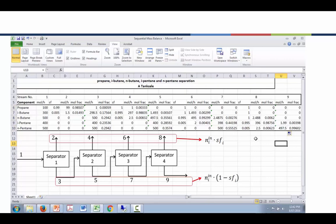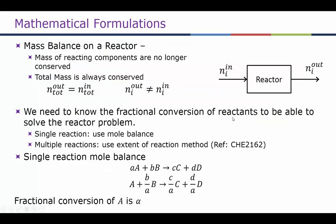You can go through the solution in your own time to check if the mass balances work out. Moving on to reactive mass balances — in this case, total mass is conserved for the reactants coming in and the products coming out of the reactor. However, the mass or moles of each component is not conserved, so we cannot use the earlier formula. We need to know the fractional conversion of the reactants and the stoichiometry. For single reactions, it's better to use mole balances in Excel; for multiple reactions, it's better to use the extent of reaction method, which you can refer to in CHE 2162.